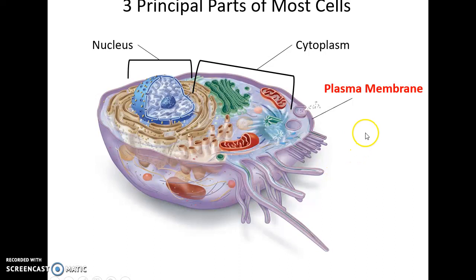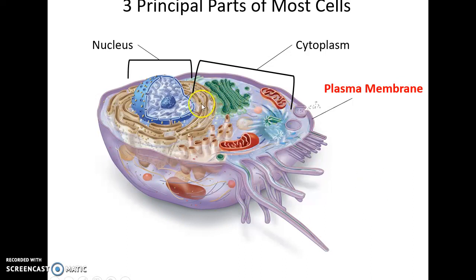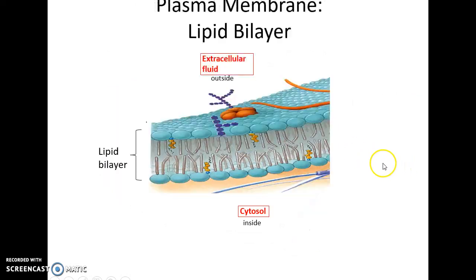Many parts of a cell include the plasma membrane, a structure that separates the inside of the cell from the outside world; the cytoplasm, which is everything between the nucleus and the plasma membrane; and the nucleus itself.